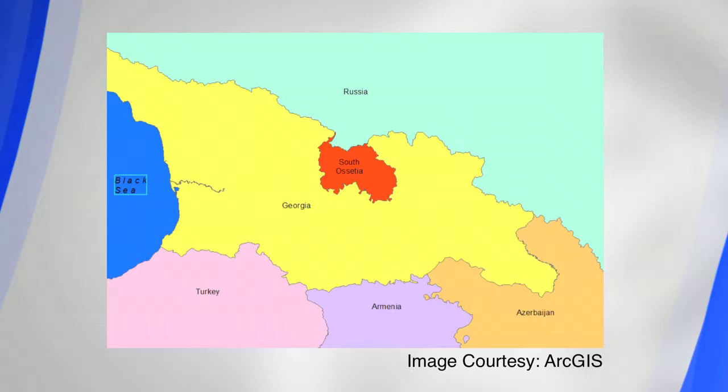Let me give you an example. There is a conflict between Georgians and South Ossetians. In August 2008, there was fighting between Georgian, South Ossetian, and Russian troops. South Ossetians and Russian troops are controlling an area that Russia, Nicaragua, and a few other countries have recognized as an independent new country, South Ossetia. But most international states recognize that area as part of the Republic of Georgia.